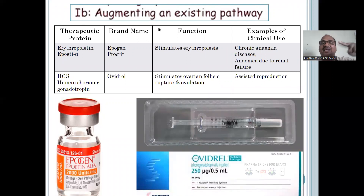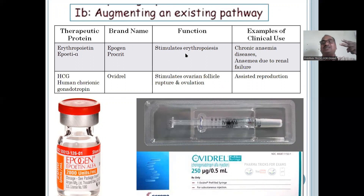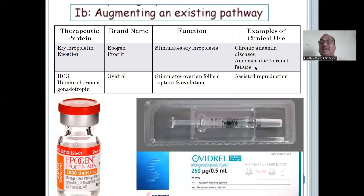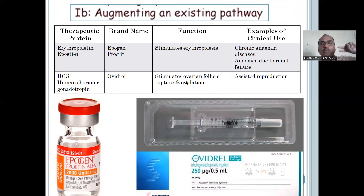Subclass 1B — augmenting, increasing the existing pathway. Example: erythropoietin, brand names Epoetin and Procrit. All these examples you must write in the examination. It stimulates erythropoiesis — used for chronic anemia and anemia due to renal failure. And HCG — Ovidrel. It stimulates the ovarian follicle; sometimes the body fails to do this, so we give this protein to stimulate — augmenting for assisted reproduction.